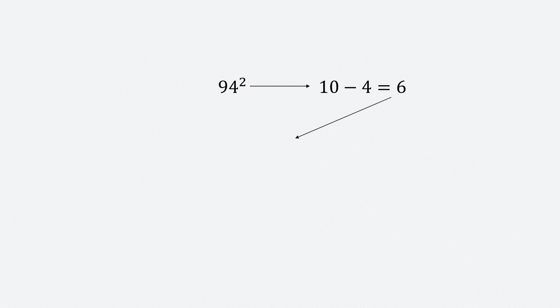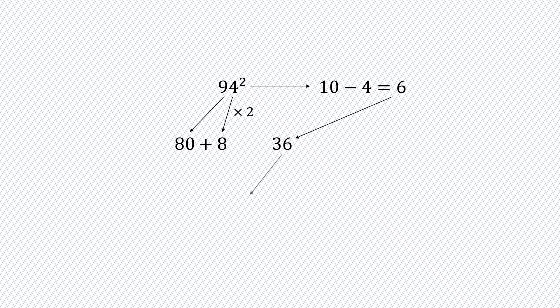The next example is 94 squared. Once again, we won't square 4 directly — subtract from 10 to get 6, and 6 squared is 36. 9 squared is 81, but subtract 1, so we write 80. Now, do 4 times 2, that's 8. Add 8 to 80. Our final answer ends with 36 and starts with 88. So, the square of 94 is 8836.